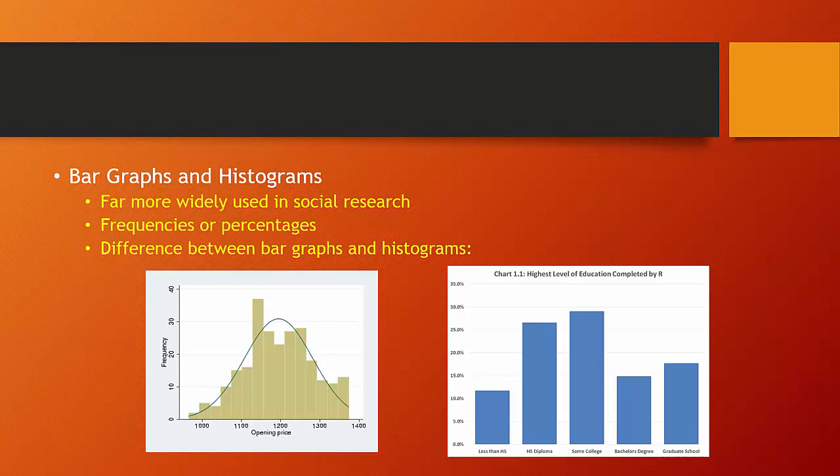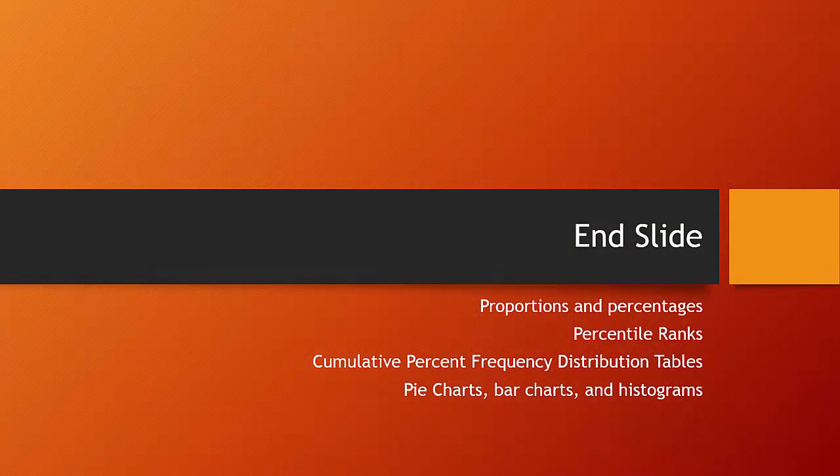The difference between the two is that the bars touch in a histogram when we have interval and ratio level data because we understand the distances. And the bars do not touch in a bar chart because we don't know the distance between possibly less than high school, high school diploma, and some college.